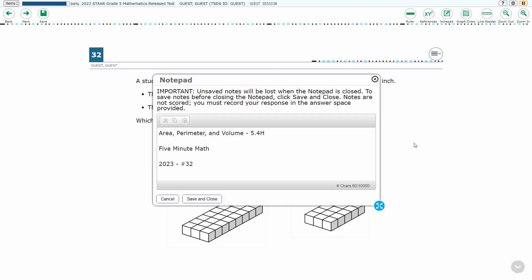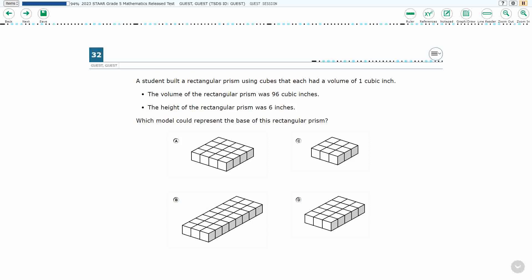Hello, and welcome to 5-Minute Math. Today we are looking at the 5th grade concept of area, perimeter, and volume. This is standard 5.4H in the great state of Texas, and we are using item number 32 off the 2023 released STAAR test.